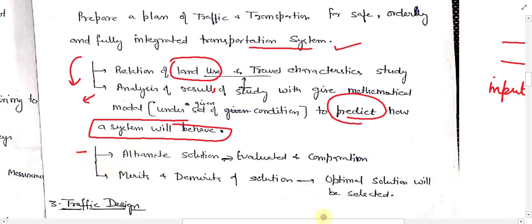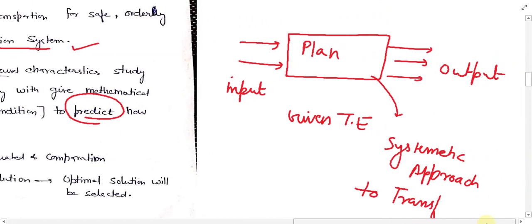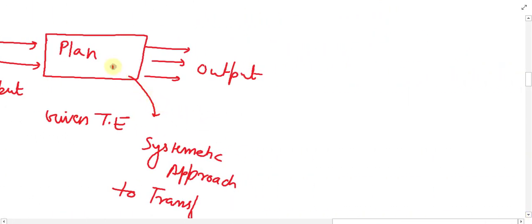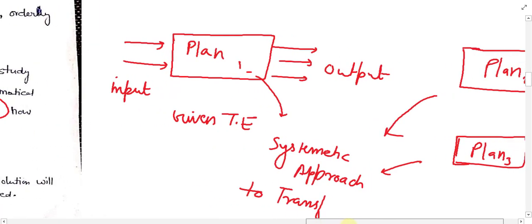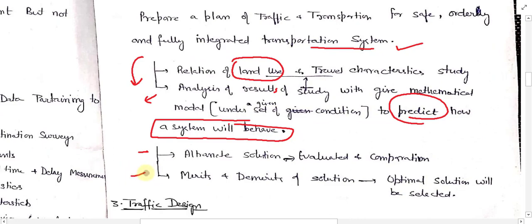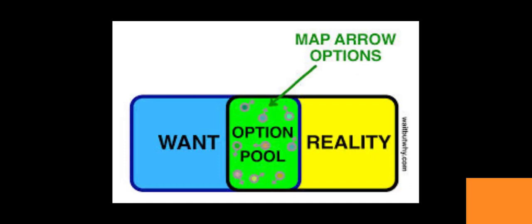The third point is finding alternate solutions and comparing those plans — plan number one, plan two, plan three — all giving a systematic approach to transportation. In the fourth point we evaluate these plans on the basis of merits and demerits and find the optimal solution. This is the second work of the traffic engineer: to plan a good traffic and transportation system.